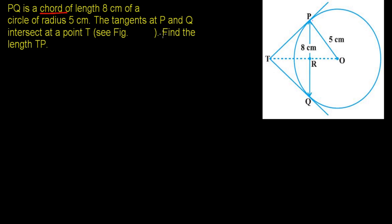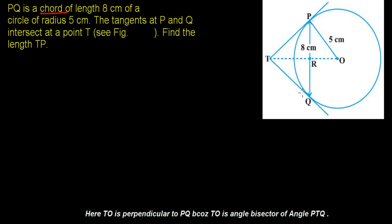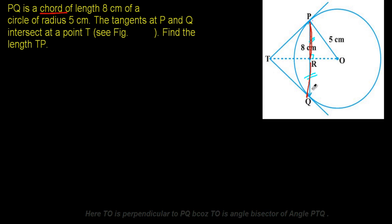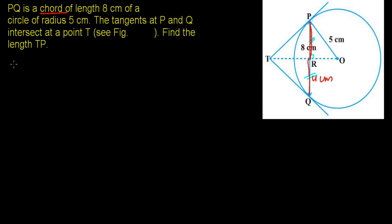This concept is going to be applied in this question. PQ is a chord of length 8 cm, so this length is 8 cm. Now, the perpendicular from the center bisects the chord, so PR equals half of PQ, which is 8 over 2, that's 4 cm. Similarly, QR is also 4 cm.